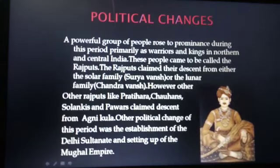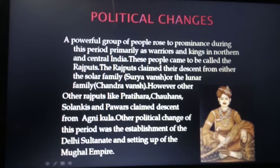Political changes: A powerful group of people rose to prominence during this period, primarily as warriors and kings in northern and central India. These people came to be called the Rajputs. The Rajputs claimed their descent from either the Solar family (Suryavansh) or the Lunar family (Chandravansh). However, other Rajputs like Pratiharas, Chauhan, Solankis and Pawars claimed descent from Agni Kula.